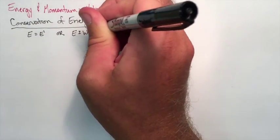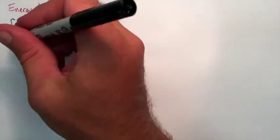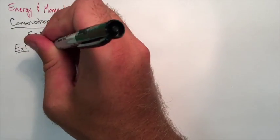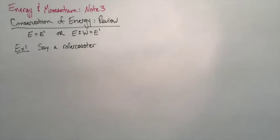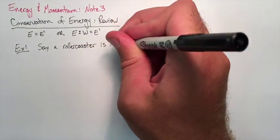So here we're going to be using E equals E prime to show that energy is conserved in our problem, or E minus or plus work equals E prime to show that work is added or subtracted from the system.